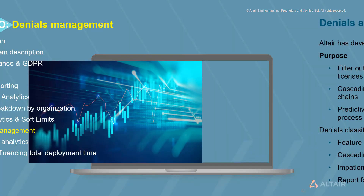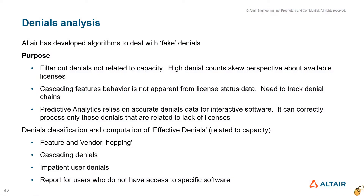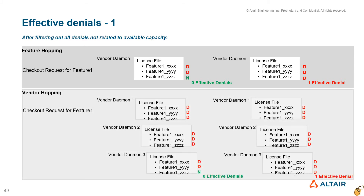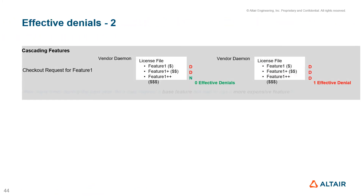Tracking denials correctly is very important for interactive software. The challenge is to account for only those denials that are related to license availability. Tracking these denials accurately is a requirement for correct functioning of the predictive analytics module. Altair SAO employs sophisticated denial chains to filter out denials resulting from feature and vendor hopping. Behavior of software packages of increasing functionality and cost cannot be analyzed without analyzing denial chains.